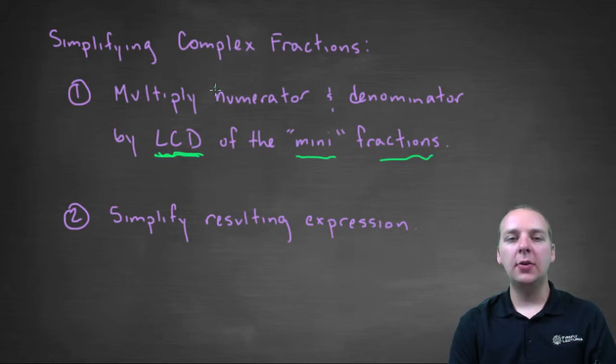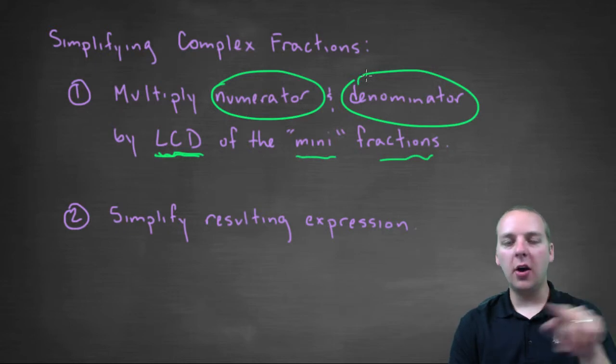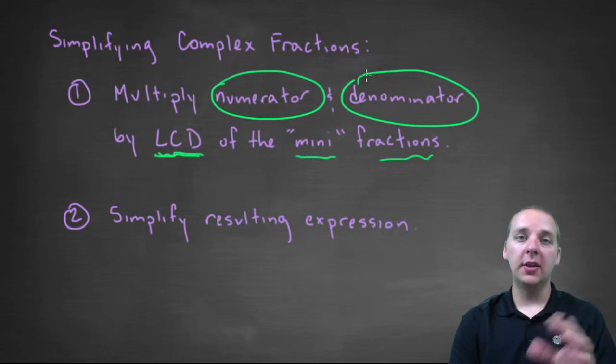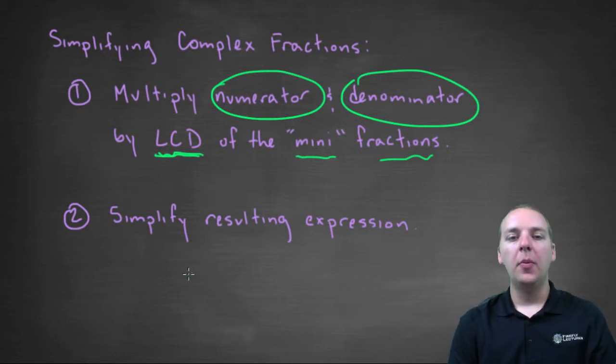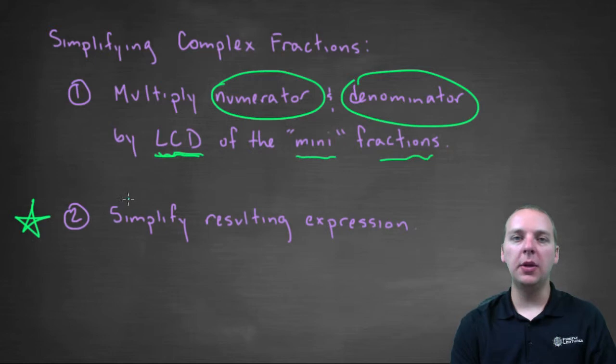Now when you multiply this LCD to both the numerator and the denominator, that's going to kill off all the little smaller fractions, leaving you with something that's not a complex fraction anymore. But we also need to do the second step as well, where we clean up or simplify what's left. So we do those two things and we'll be good to go.